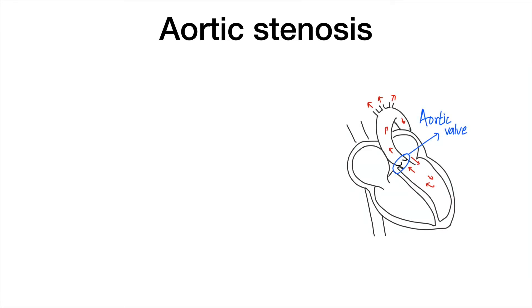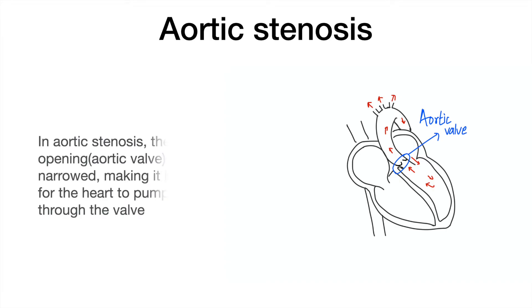You can start by telling the patient: based on the history and physical examination, most likely you are having a condition called aortic stenosis. Then use the pen and paper given in the exam to draw a simple picture of the heart. Explain the basic anatomy: the heart has four chambers, the right side pumps blood into the lungs, and the left side pumps blood into a large vessel called the aorta through an opening called the aortic valve.